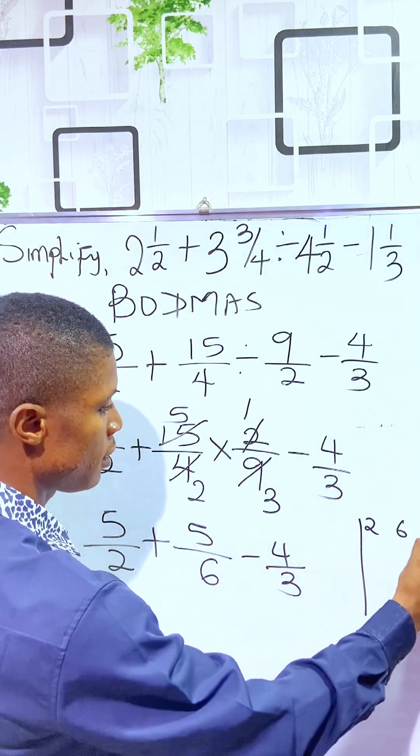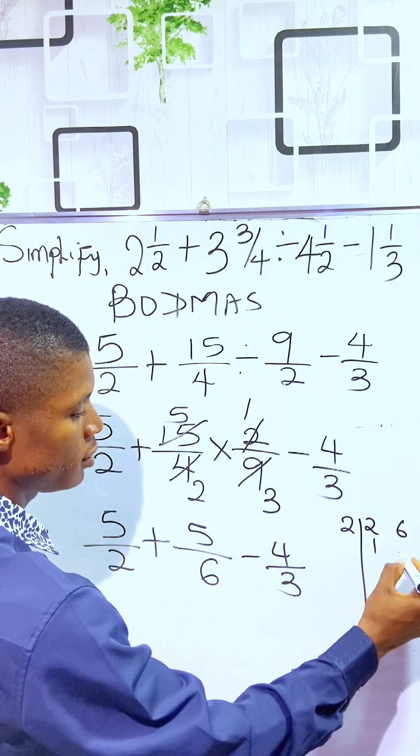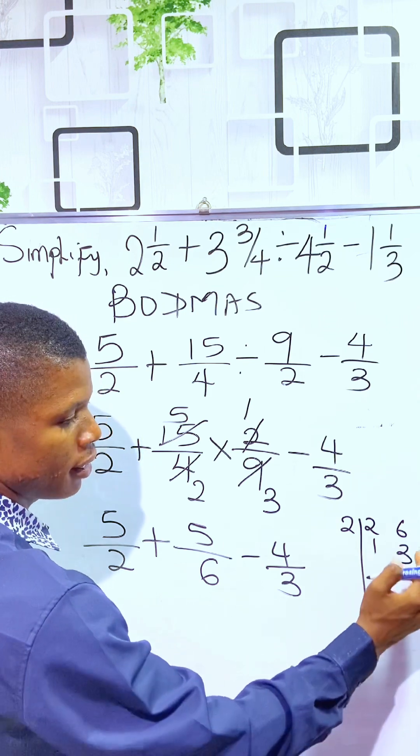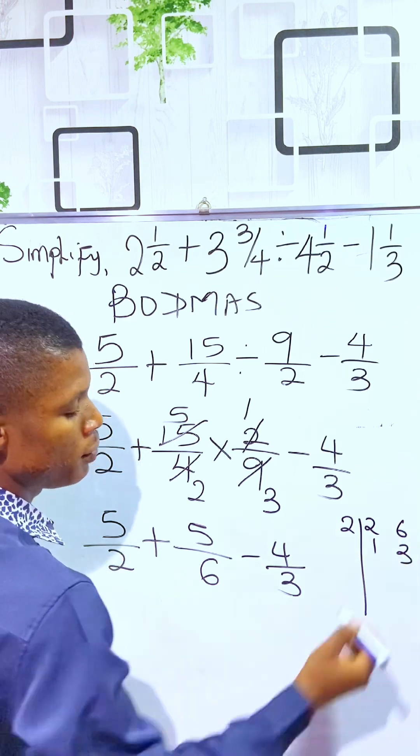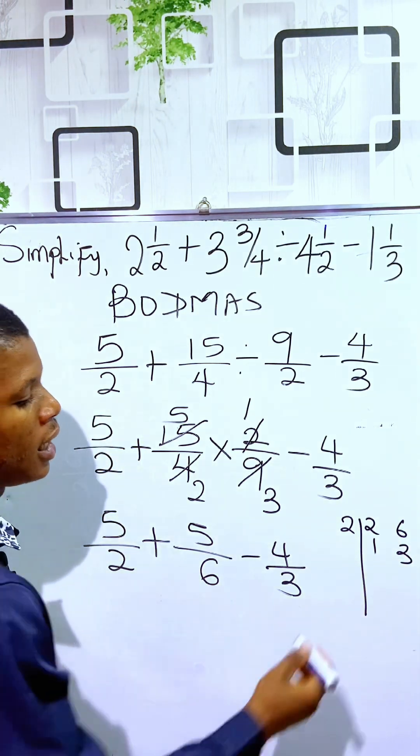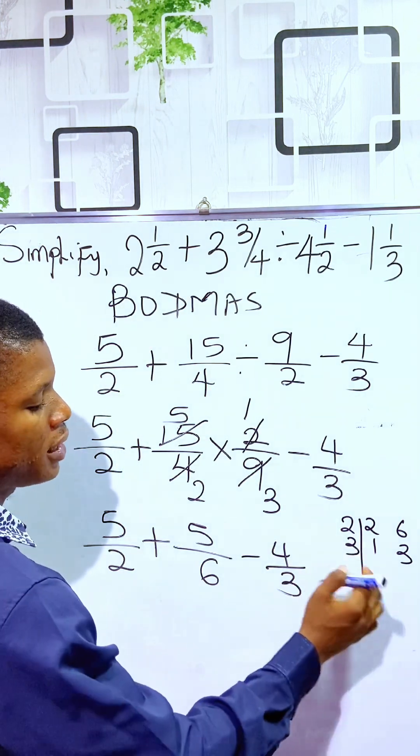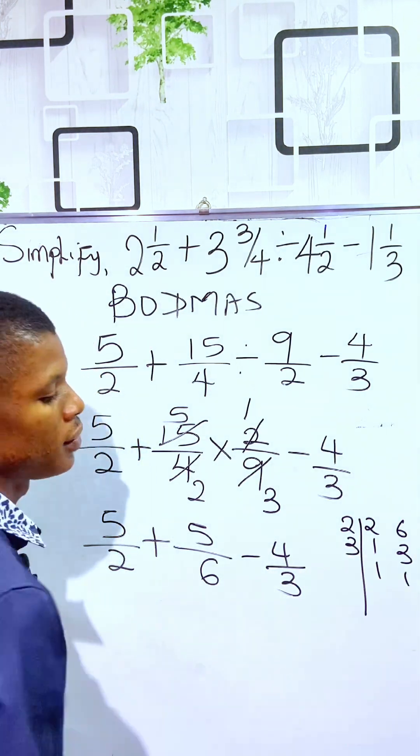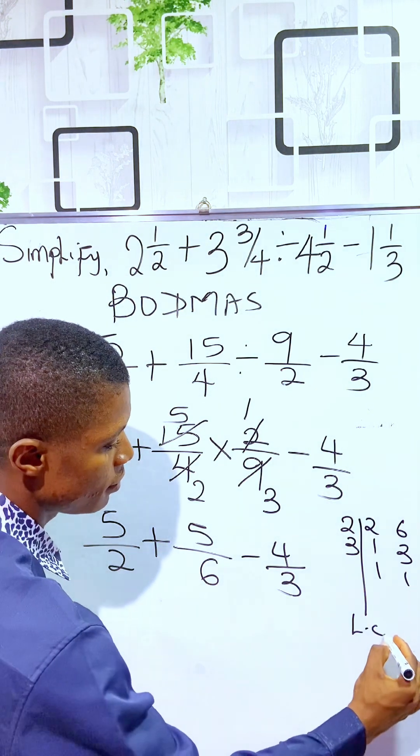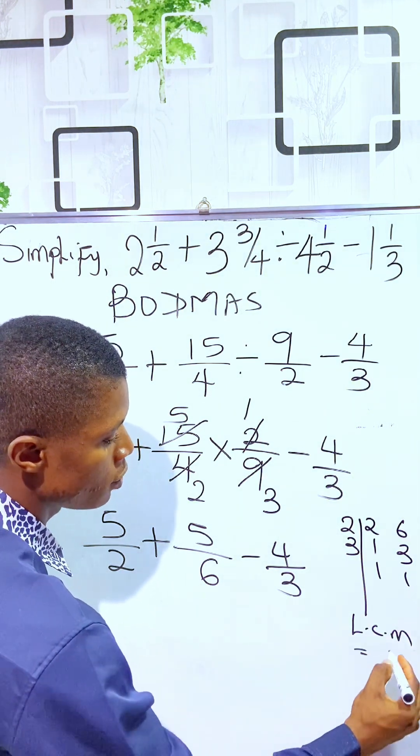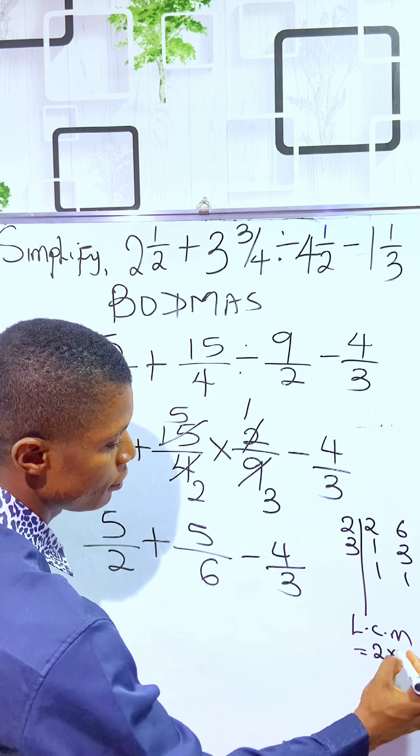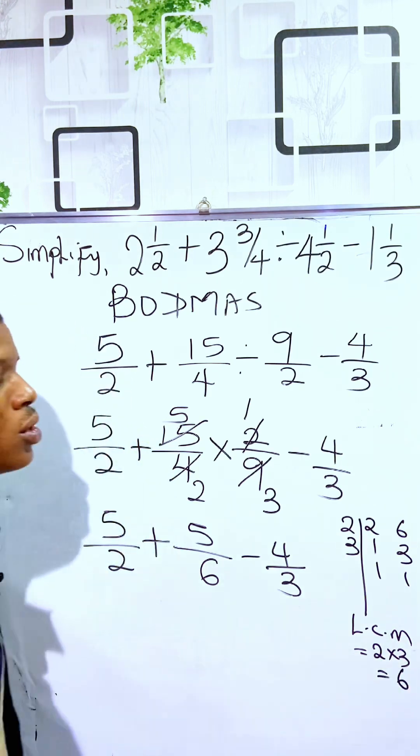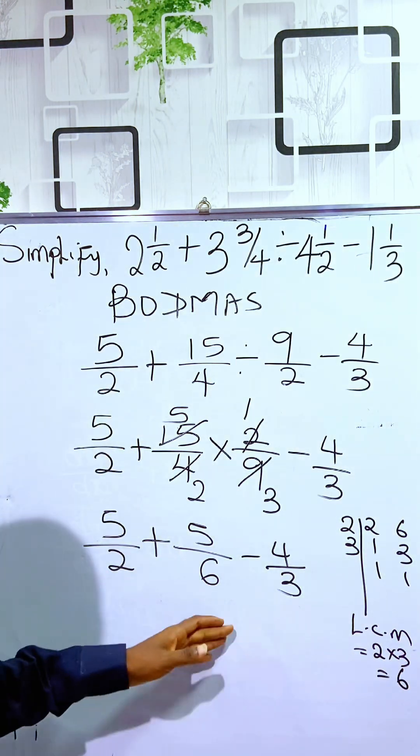Let's do that quickly. We have 2, 6, and 3. 2 divides to get 1, 3, and we bring it down. Then, 3 will divide. If 3 divides, we have 1, 1, 1. So, you can see that the LCM is equal to 2 times 3, which is 6. So, the lowest common multiple here is 6.